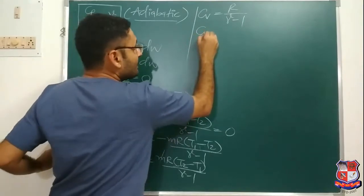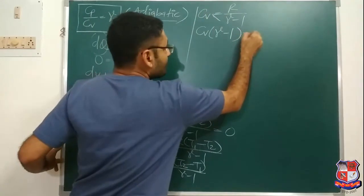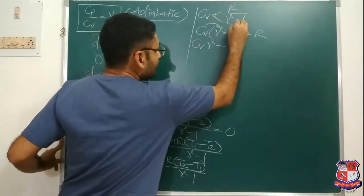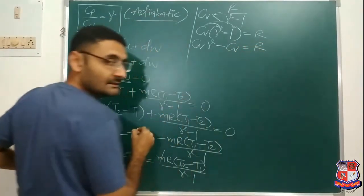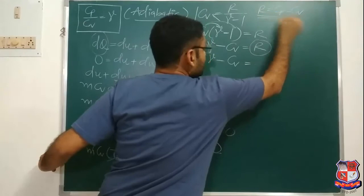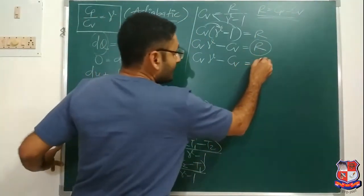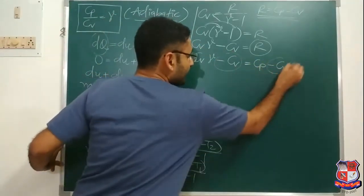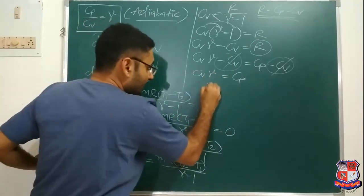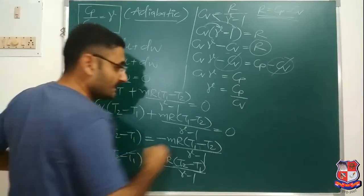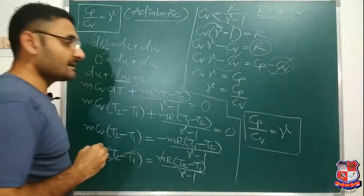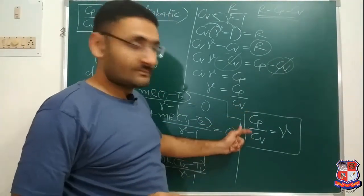By cross multiplication: Cv(gamma minus 1) equals R, which expands to Cv·gamma minus Cv equals R. Now, R equals Cp minus Cv (a standard relation already proved in a previous video). Substituting: Cv·gamma minus Cv equals Cp minus Cv. The Cv terms on both sides cancel, leaving Cv·gamma equals Cp. Dividing both sides by Cv gives: Cp/Cv equals gamma for the adiabatic process.